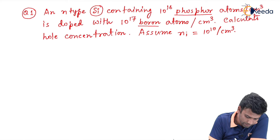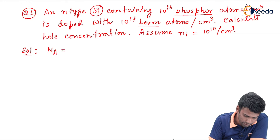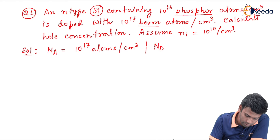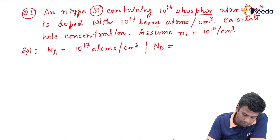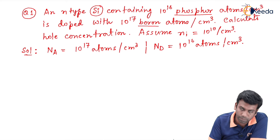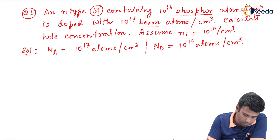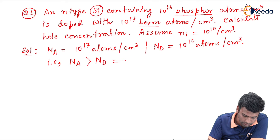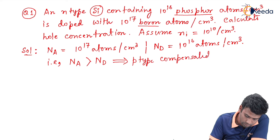The concentration of the acceptor impurity Na is 10 to the power 17 atoms per centimeter cube, and the concentration of the donor impurity Nd (phosphorus) is 10 to the power 16 atoms per centimeter cube. Since the acceptor concentration is greater than the donor concentration, that is Na is greater than Nd, we can say it is a p-type compensated semiconductor.